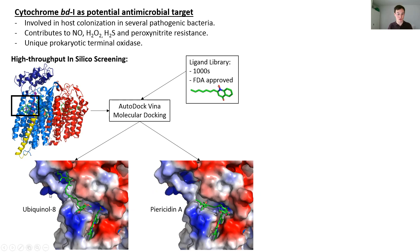On the left is ubiquinol-8, the native quinol used in E. coli, docked into the quinol binding site. And on the right is a known inhibitor, pyocidin A, that also docks nicely into the quinol binding site.